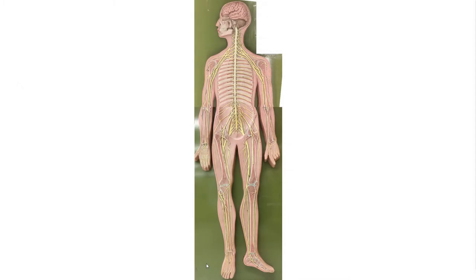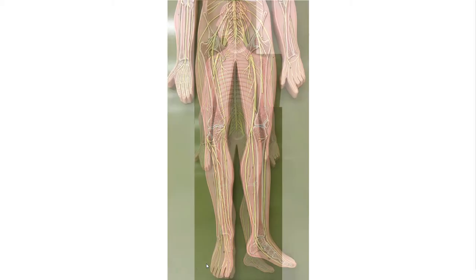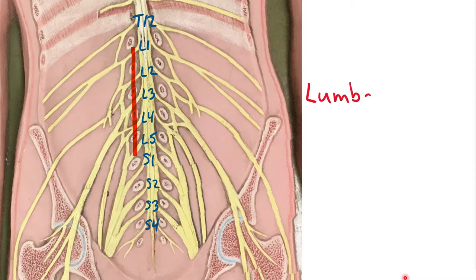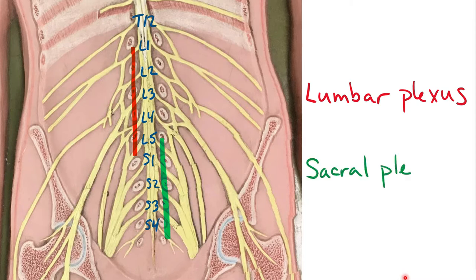The first thing we want to do is confirm that we can identify both the lumbar and the sacral plexuses, so we're going to zoom into that region of the spinal cord. The last rib visible is the 12th rib, so the spinal nerve coming out just below that is T12. From there we can label lumbar spinal nerves L1 through L5, then the four sacral nerves S1 through S4. The lumbar plexus originates from the anterior rami of L1 through L5, and the sacral plexus from L5 through S4, highlighted here on the model.